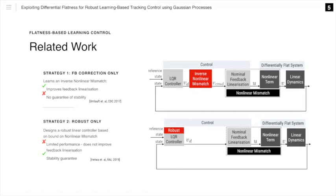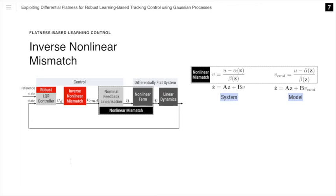Our proposed approach combines ideas from both strategies. Our proposed methodology has three key components. Similar to strategy one, we learn an inverse non-linear mismatch by using a Gaussian process, which improves the feedback linearization. We then show how we can quantify the uncertainty in this improved feedback linearization. This bound on uncertainty is variable and adapts based on where we have more data and knowledge about our system, therefore allowing us to better achieve a balance between performance and robustness. We can then use this in a robust linear control framework to guarantee an ultimate bound on the tracking error.